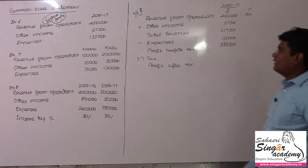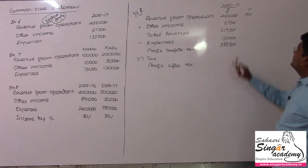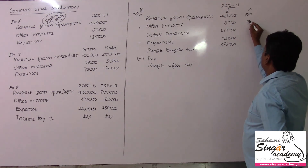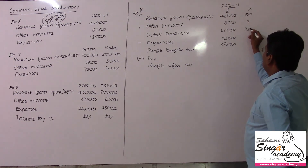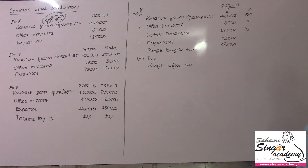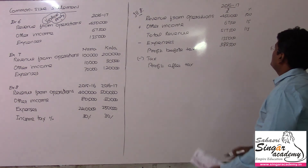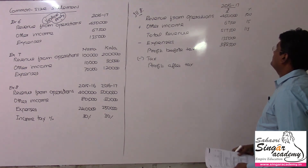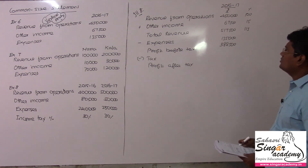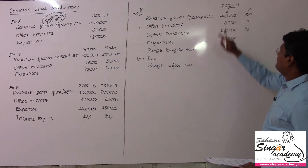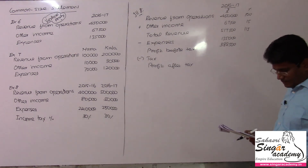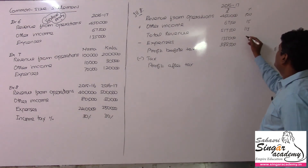Of course, we do not have the tax and profit before tax. So 67,500 divided by 4 lakhs 50,000 gives 15 percent. If you compare 5,17,500 divided by 4,50,000 you will get the same answer. Then 1,35,000 divided by 4,50,000 — expenses come to 30 percent.